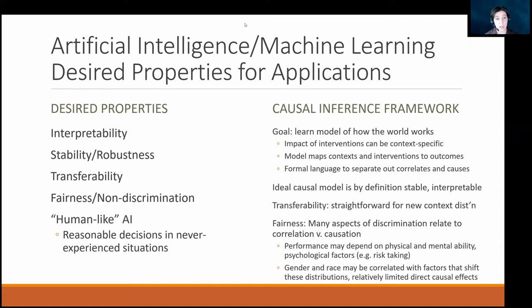Another hot topic is fairness and discrimination. A lot of the issues that come up there also relate to correlation versus causation. For example, if I took a resume and changed a Russian name to a Chinese name, how would that affect your ability to get a job in Russia, China, or America? We can think about the causal impact of a resume being identified with a particular ethnicity. One version of fairness might be: if we had the same information and skillset, but I changed your ethnicity in the interview process, would that change your probability of getting hired?